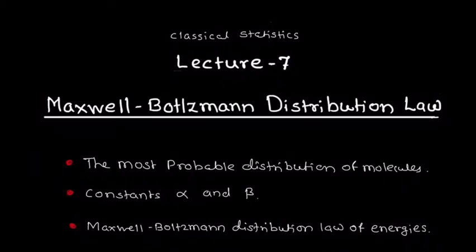Here we discuss the Maxwell-Boltzmann distribution law. In this article we explain firstly the most probable distribution of molecules and find its relation with the constants alpha and beta. Finally we find a relation in terms of energies, which we call the Maxwell-Boltzmann distribution law of energies.